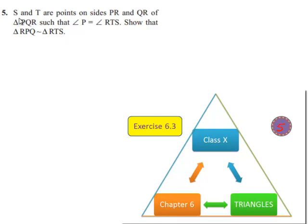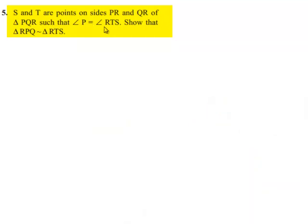Moving on to the fifth question. S and T are points on sides PR and QR of triangle PQR such that angle P is equal to angle RTS. Show that triangle RPQ is similar to triangle RTS. Now moving on to the solution.